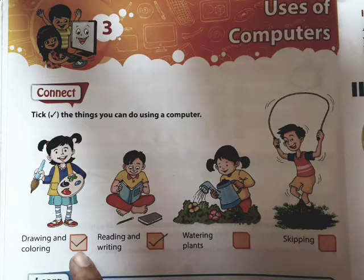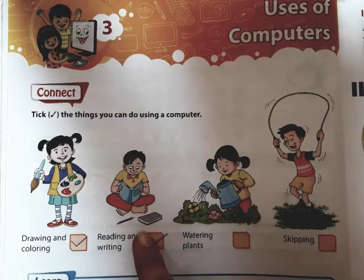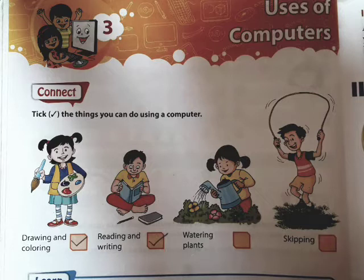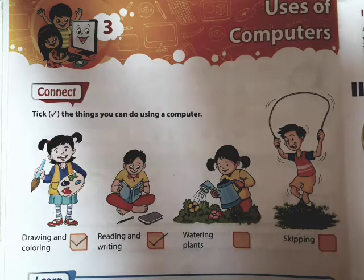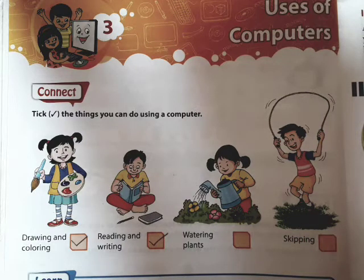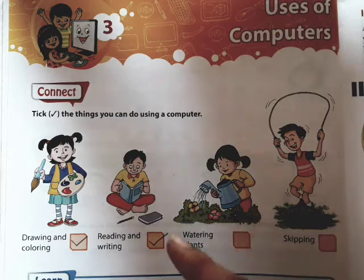Reading and writing — it is also possible on a computer, so you may tick this box. Watering the plants — no, it is not possible on a computer, so leave this blank. Skipping — no, you can't do skipping on a computer, so leave this box empty too.